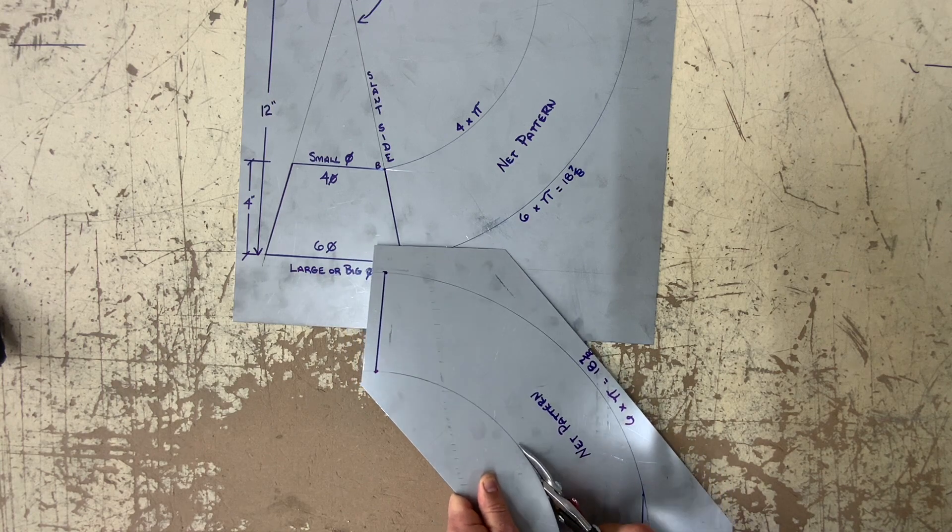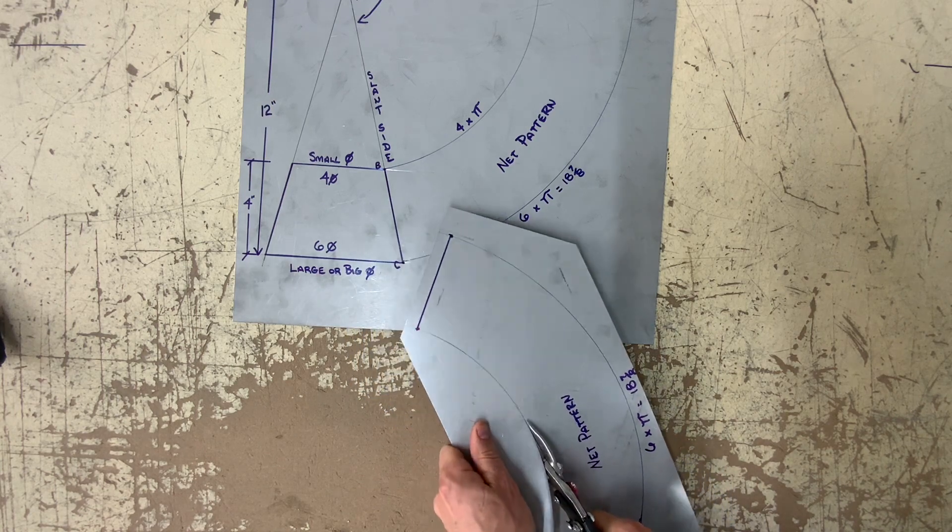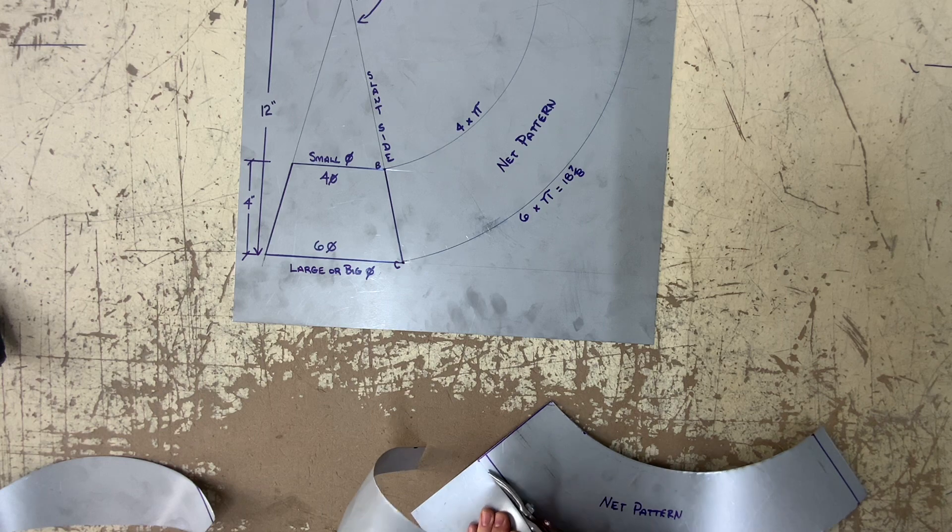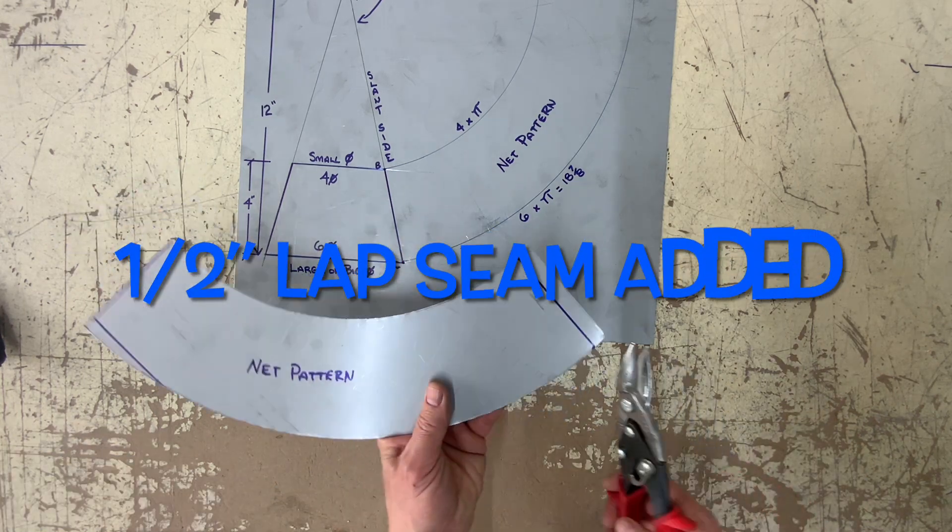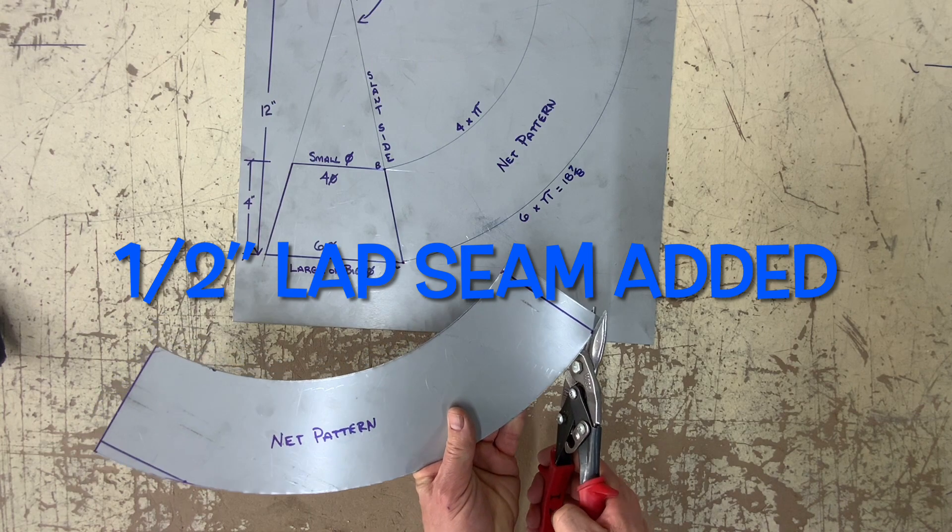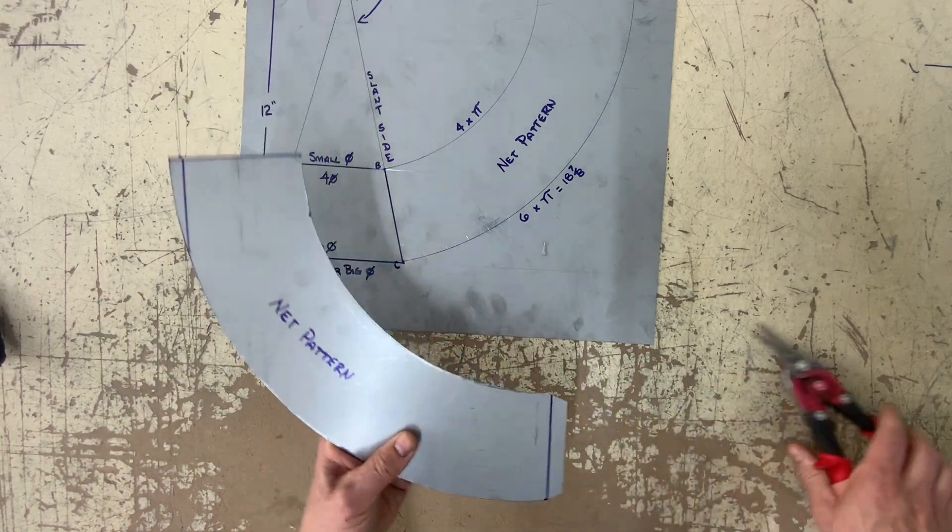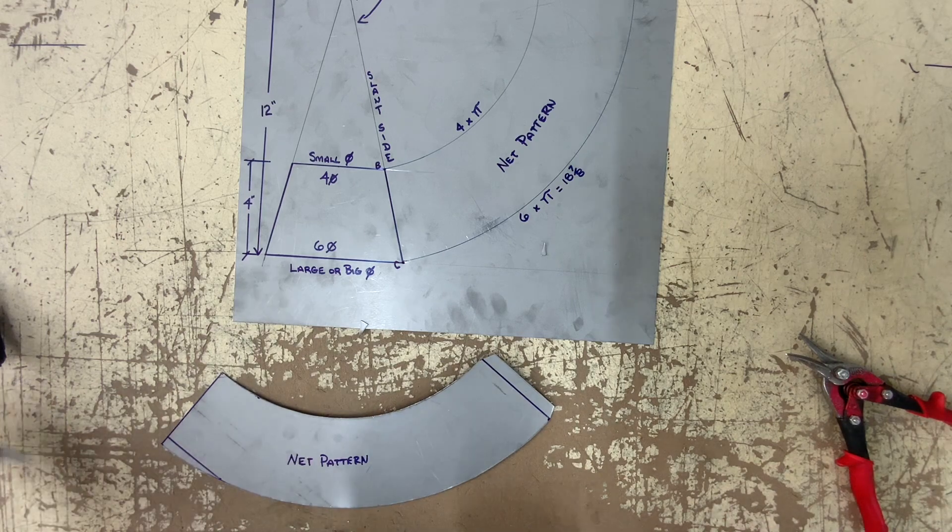Now we are going to fabricate this reducer. So obviously we need to cut out the pattern. And here you'll see that I added a half inch lap seam, slightly notching the ends.